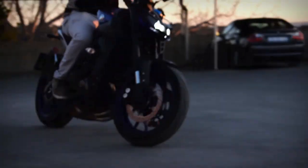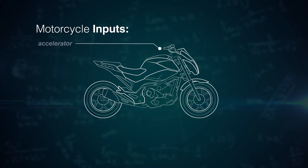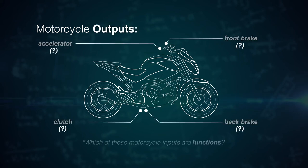To better demonstrate the differences between a relation and a function, I'd like to use the simple example of a motorbike. Let's focus on the different inputs the bike has to determine what their outputs are, and therefore determine whether these relations are functions or not.